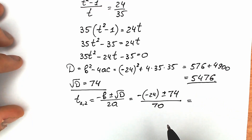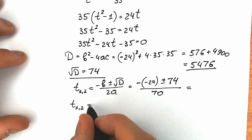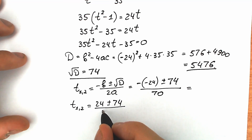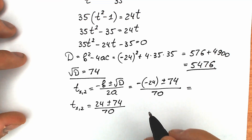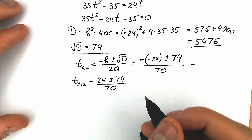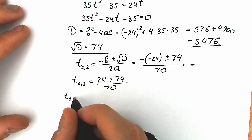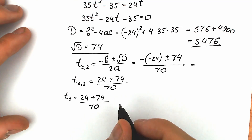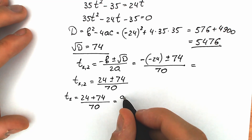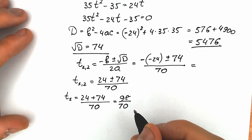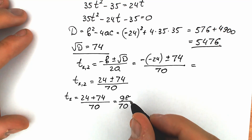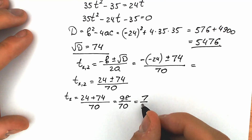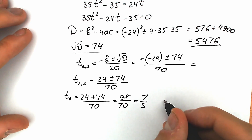Now let's plug in to the quadratic formula: t equals (minus b plus or minus square root of D) over 2a, which gives us (24 plus or minus 74) divided by 70. For t₁ with the plus sign: t₁ equals (24 plus 74) over 70, which is 98 over 70. Simplifying by dividing by 2 gives 49 over 35, so t₁ equals 7 over 5.